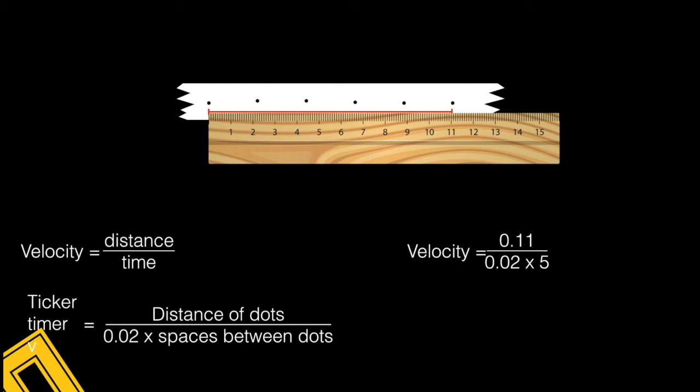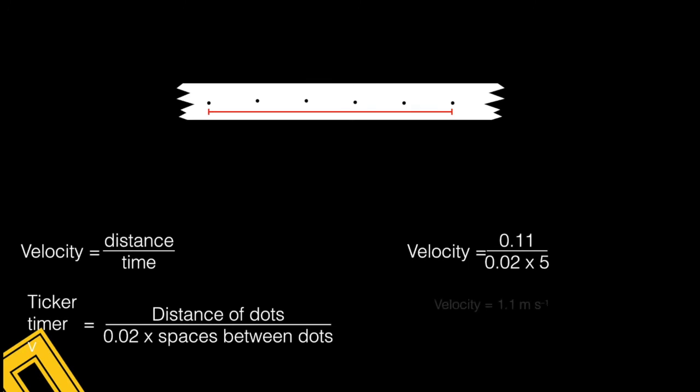Divide that by 0.02 times 5, because there are 5 intervals. That's going to give me a velocity of 1.1 meters per second.